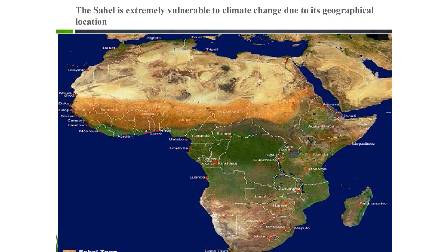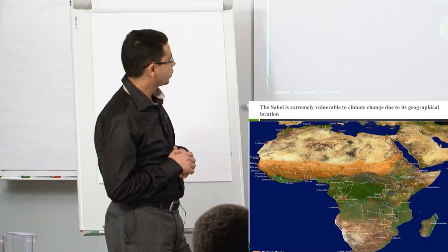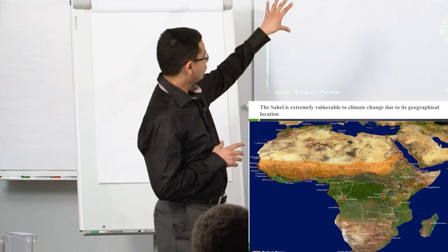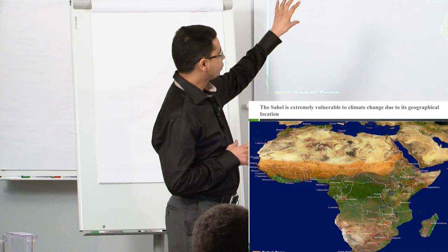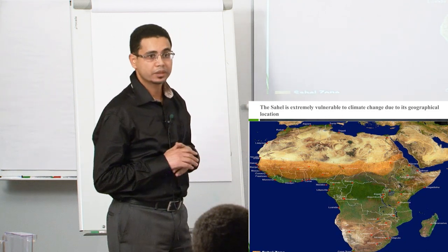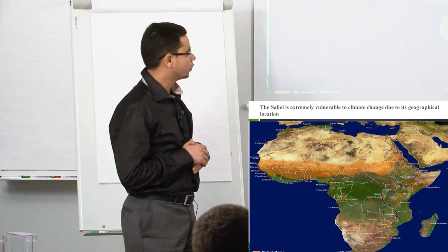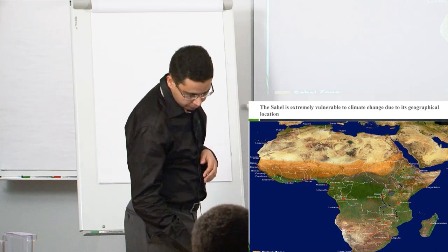What I mean by the Sahel region is this transition zone between the dry Sahara and the tropical green forest in Africa. It's on the border of the MENA region. In general, I work on the Middle East and North Africa region, but this region is really relevant to the Middle East, and I will give some arguments for why I want you to focus on the Sahel.